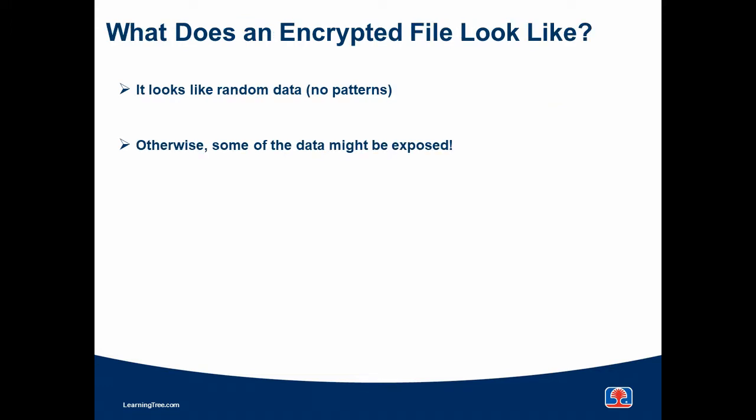What does the file look like once it's been encrypted? It looks like random data — there are no patterns. If there were patterns, there might be a way for an attacker to figure out what the contents of the file are, even though it's encrypted. So an encrypted file should look very random and have no patterns. It'll also be the same size as the original data, with perhaps a little tiny bit of header information inserted.